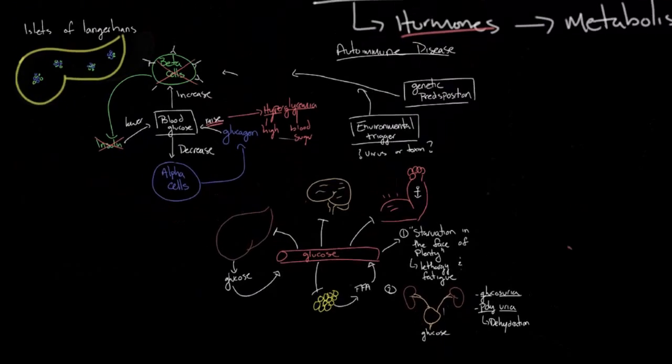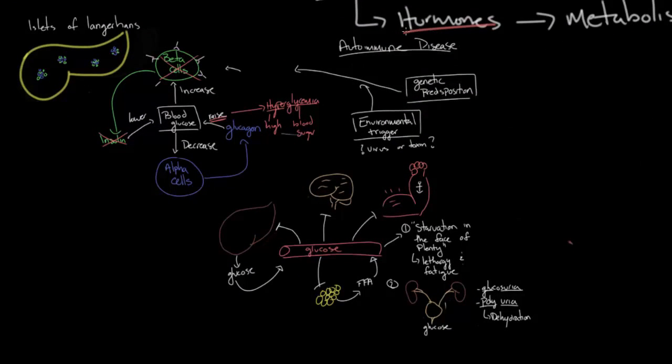So this is just a brief overview of type 1 diabetes, which is an autoimmune disease, meaning that there's antibodies and T cells that destroy the beta cells of the pancreas so that the pancreas can't produce insulin, resulting in hyperglycemia or high blood sugar. And it's this high blood sugar that results in all of the symptoms of type 1 diabetes.